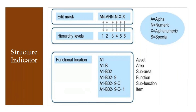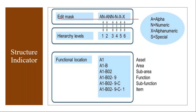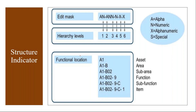In the edit mask you can see hierarchy level 1, level 2, level 3, level 4, level 5, and so on. 'A' means the system will allow only alphabetic characters; 'N' means only numeric values; 'X' allows both alphanumeric characters; and special characters are also configurable. Each level is separated by a hyphen. This edit mask is required to create functional locations — it gives you the hierarchy levels structure.